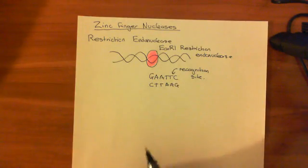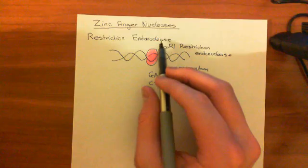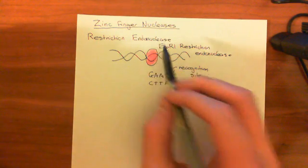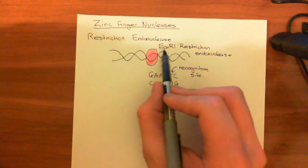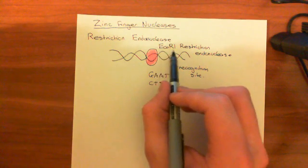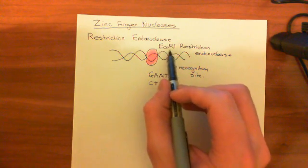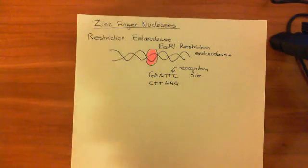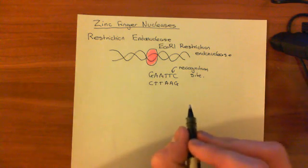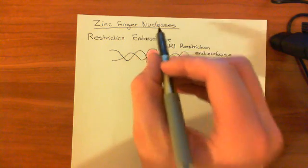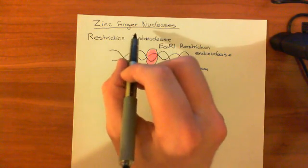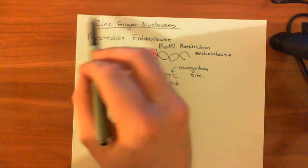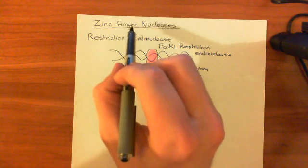Now what we're going to discuss is zinc finger nucleases. They are a type of restriction endonuclease — they recognize a specific sequence of organic bases in DNA and then produce a cut. The difference is that ECO-R1 we got from nature; it's found in E. coli, used to protect itself against viral DNA. Zinc finger nucleases, however, are synthetic — we made these — but we used biologically found molecules to make them.